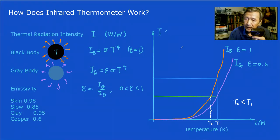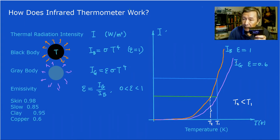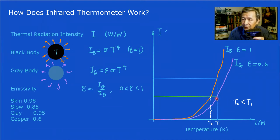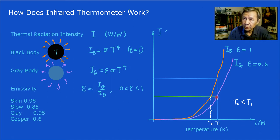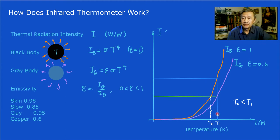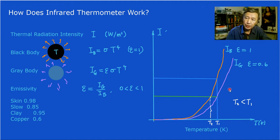By adjusting the emissivity on this IR thermometer, the machine will use the purple diagram — the gray body curve — to determine the temperature. In this way, the temperature displayed will be identical to the actual temperature of the gray body object being measured.